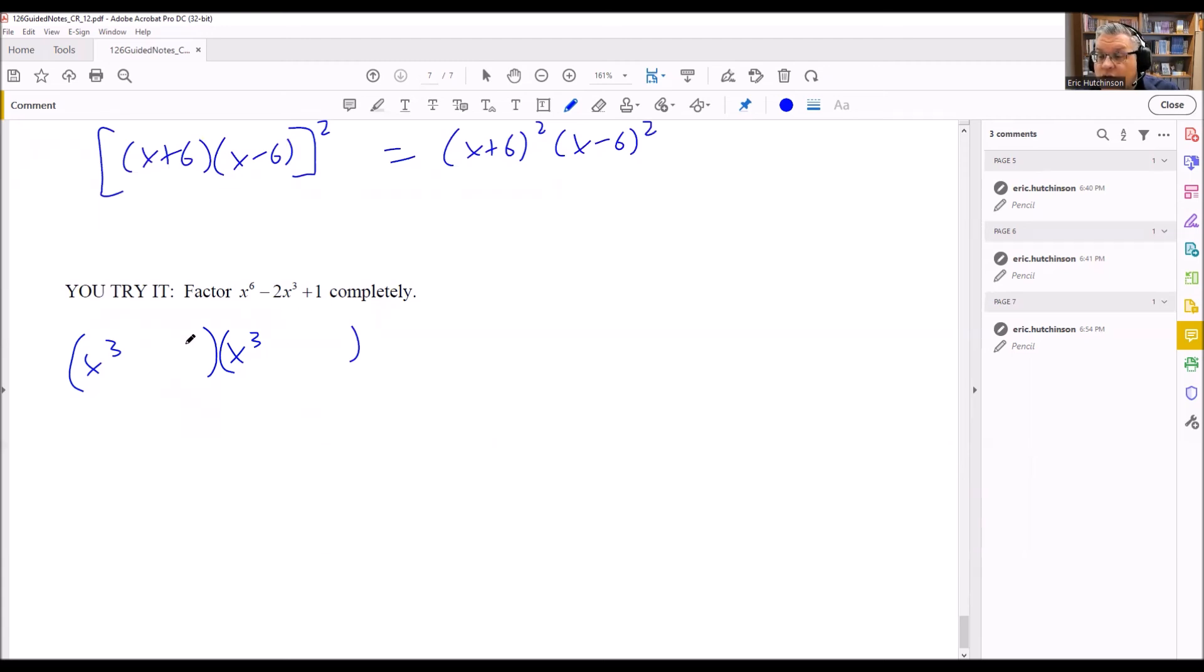Now the one, there's really only one possibility that could go there, would just be a one and a one. One times one multiplies to make one, but they also, if you make both of them negative, then that would combine together to be a negative two. And you'd have negative two x cubed because of the foiling that you would do on this one. This can be written as x cubed minus one quantity squared.